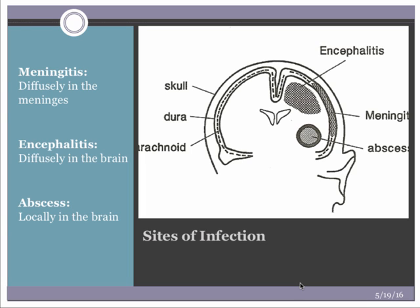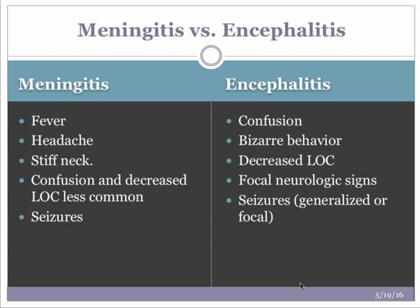There are three major sites where infections occur in the nervous system: diffusely in the meninges, producing meningitis; diffusely in the brain, producing encephalitis; or locally in the brain, producing encapsulated abscesses. There are other sites like subdural and epidural spaces, but we'll focus on the most common infections.